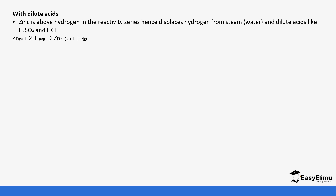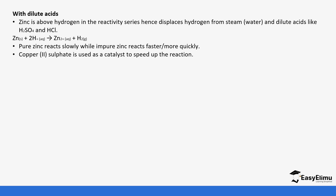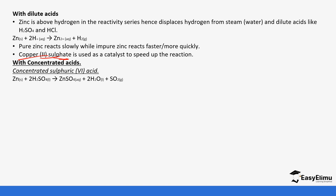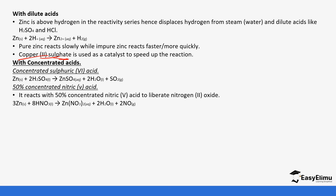With dilute acids, zinc is above hydrogen in the reactivity series so it reacts: with dilute sulfuric acid it forms zinc sulfate and hydrogen gas; with dilute hydrochloric acid it forms zinc chloride and hydrogen gas. Pure zinc reacts slowly, so copper(II) sulfate is commonly used as a catalyst. With concentrated sulfuric acid, zinc forms zinc sulfate, sulfur dioxide, and water.